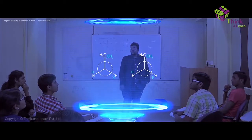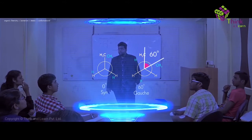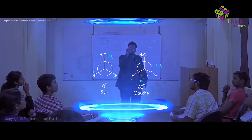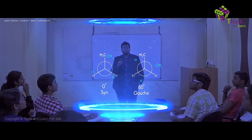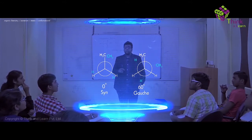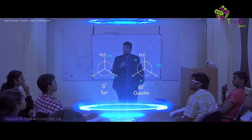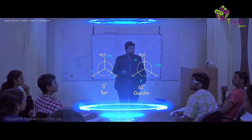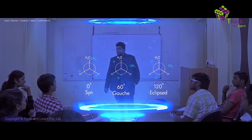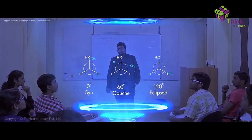Now if I change the dihedral angle and rotate it by 60 degrees, you get this new conformation. The dihedral angle I'm referring to is between CH3 and CH3. In the first conformation the angle was zero — it was eclipsed. Now between the CH3 of the first carbon and the CH3 of the second carbon, the angle is 60 degrees. This is called the gauche conformation.